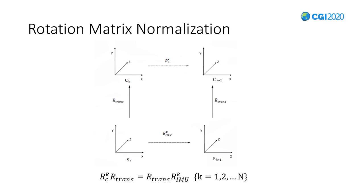For a better understanding, let's take a look at the picture. Every photo we take, the rotation matrix R_trans between the camera frame C_k and the IMU frame F_k stays constant. Being provided with multiple pairs of data, we can solve the function with the Li-algebra method. Finally, we can get our rotation matrix of camera, R_trans.